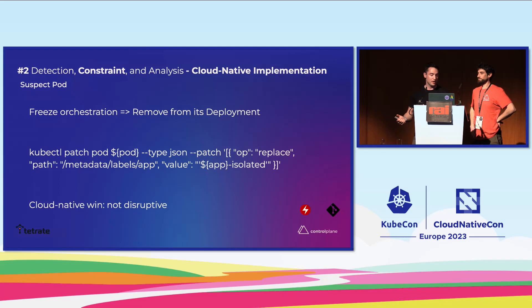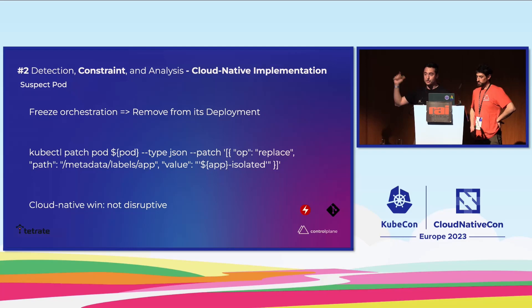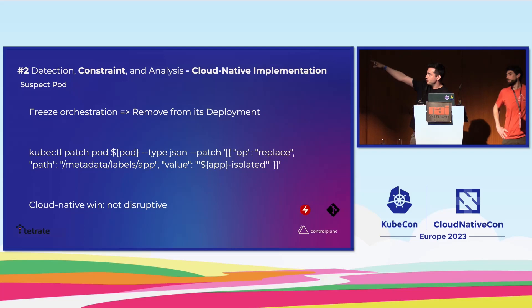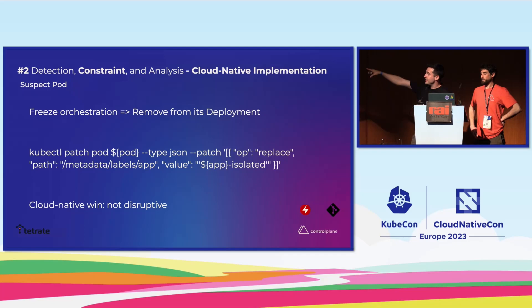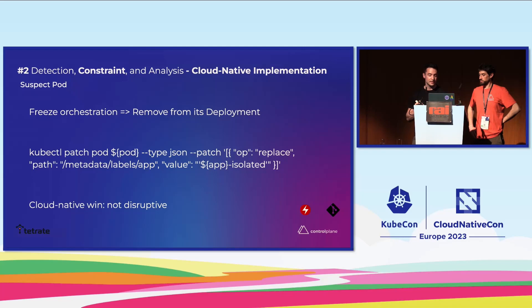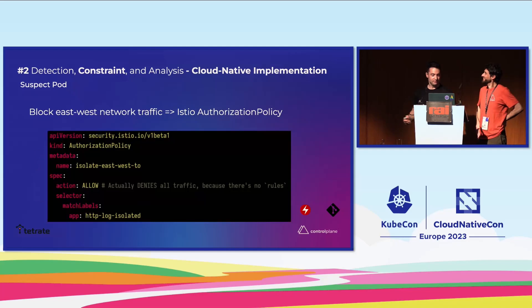How do we actually do this in a cloud-native environment? The easiest way to freeze orchestration is to remove that pod from the deployment by changing the label the deployment is matching — change the label on the one running pod to something like 'foo-isolated'. The deployment controller will then leave it alone, and will spin up a replacement to maintain the service level. This is not disruptive because Kubernetes brings a 10th pod back into life automatically.